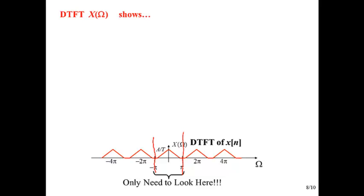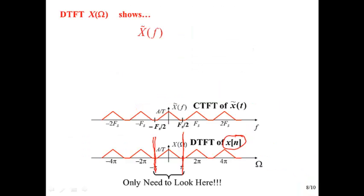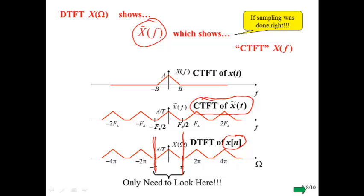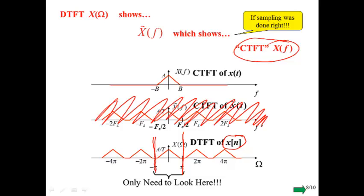But the point we're trying to make here is that if we've done everything correctly and we somehow manage to compute this DTFT directly from these samples, and we look between minus pi and pi, we can see that the DTFT shows us this thing that we've been calling x tilde of F, which is the CTFT of the signal halfway through the DAC. But we already know that if we do our sampling correctly, that thing, x tilde of F, shows us the CTFT of x of F.